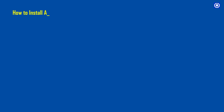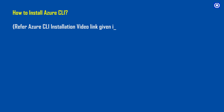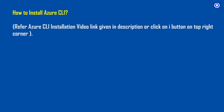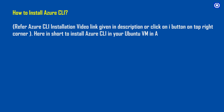How to install Azure CLI. Refer to the Azure CLI installation video link given in the description and click the 'i' button on the top right corner. Here in short, to install Azure CLI in your Ubuntu VM in Azure cloud, use the bash command shown to install it.